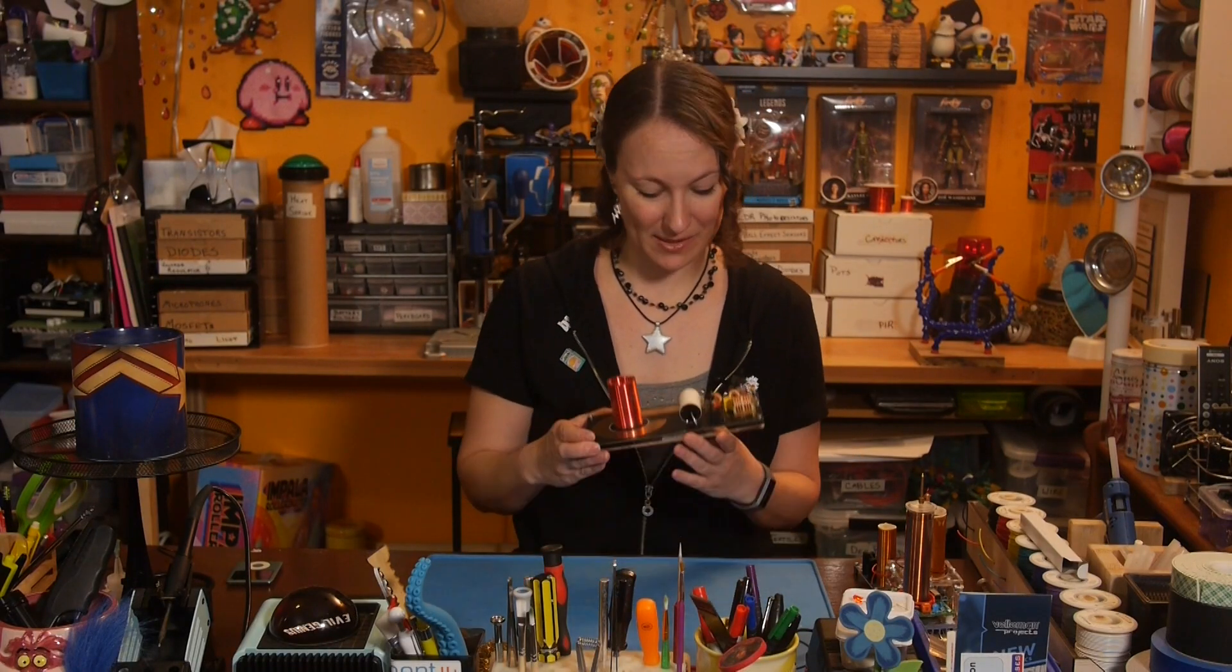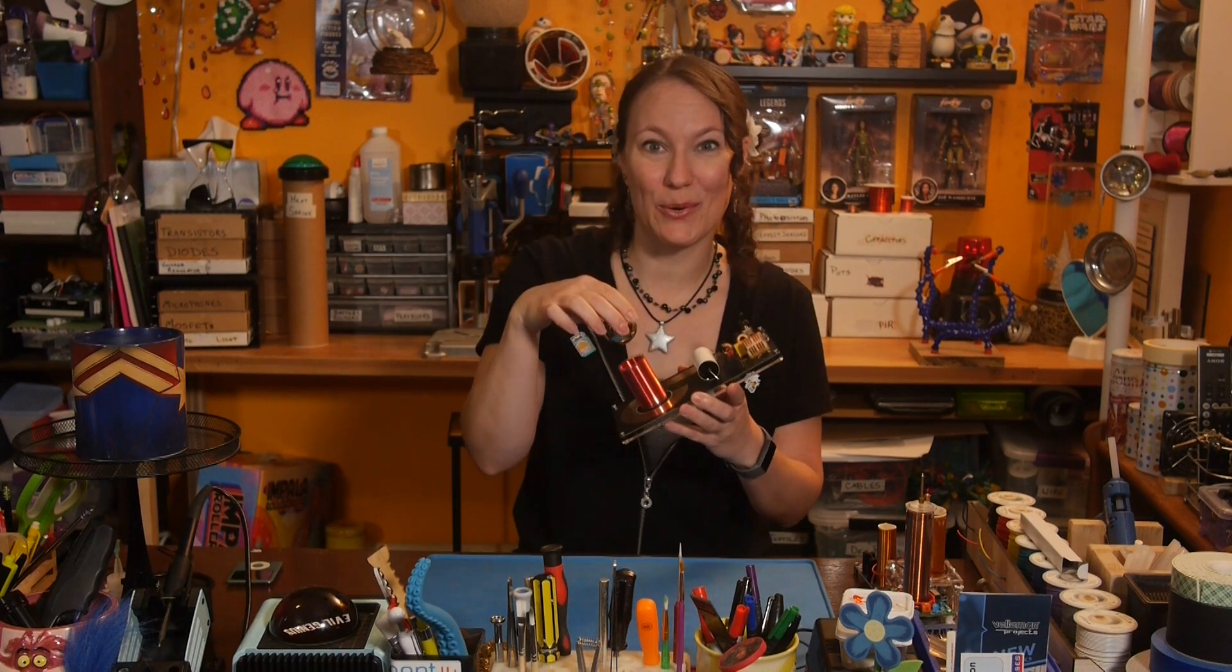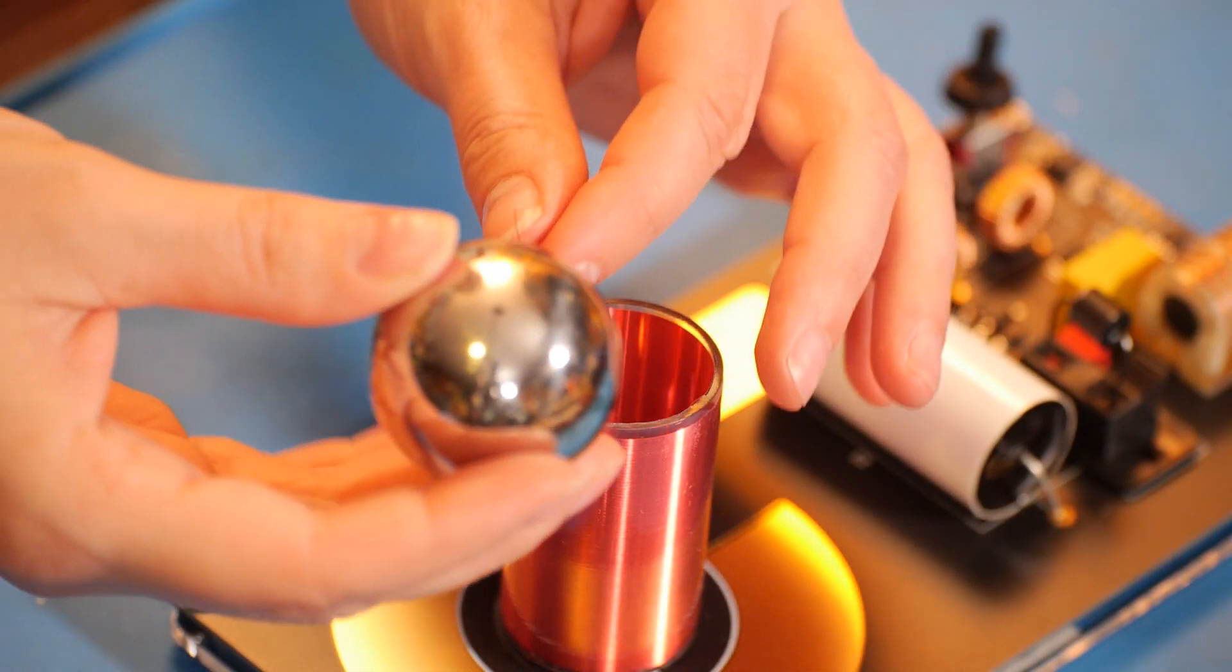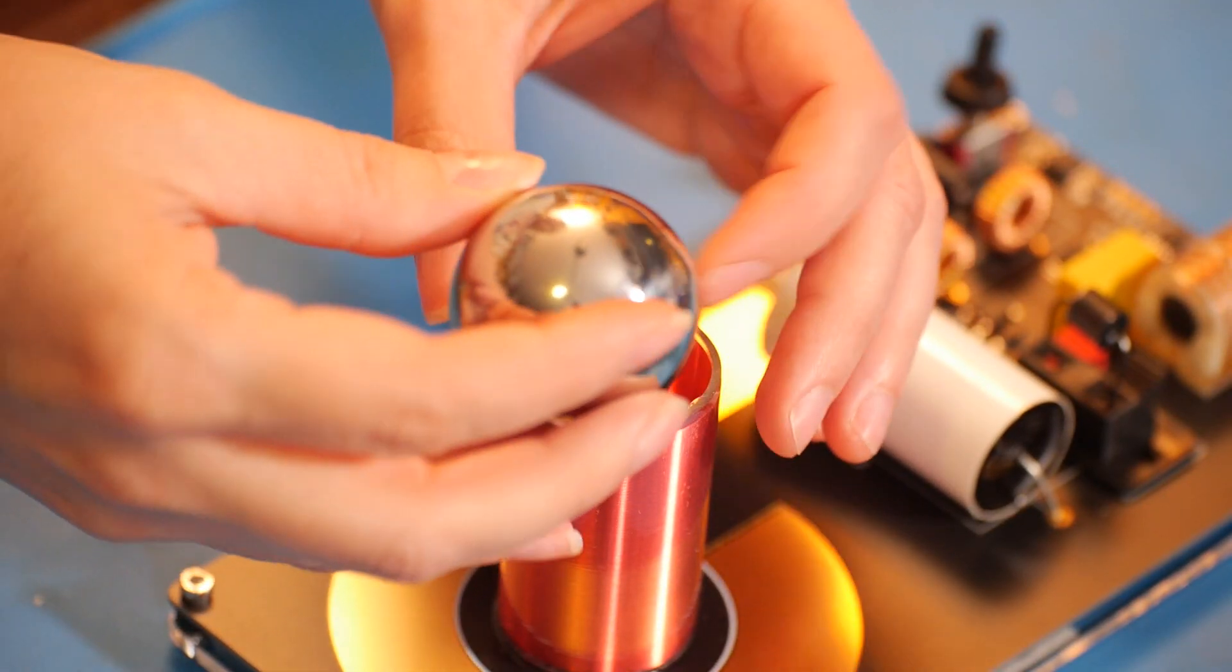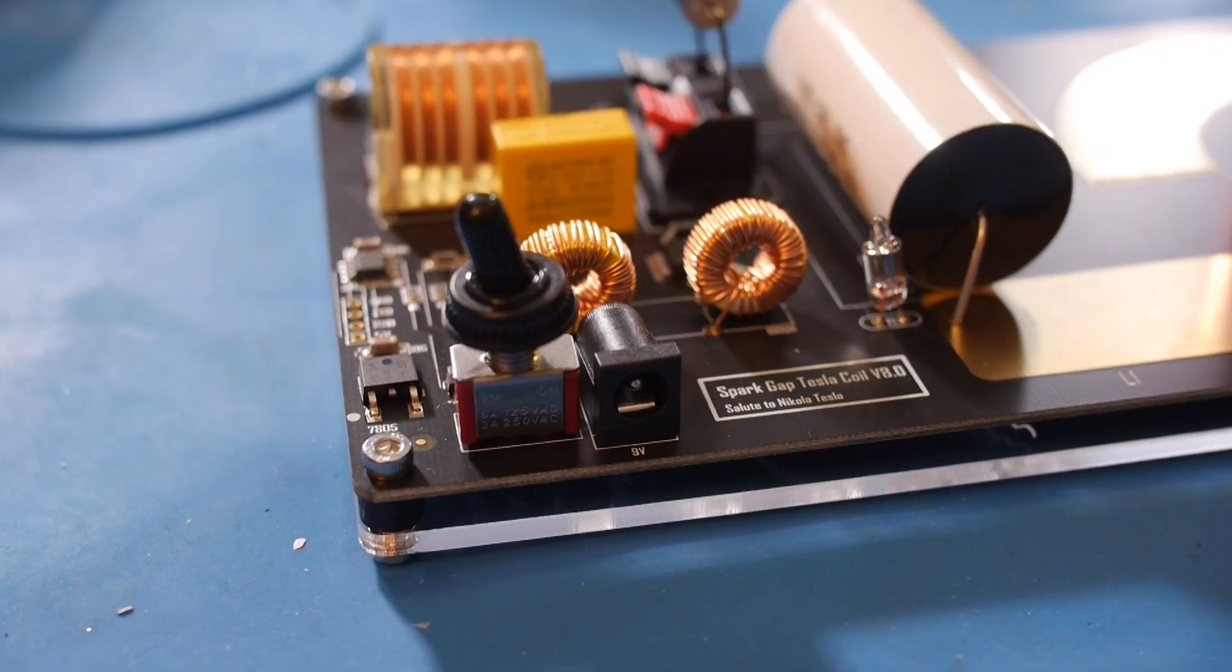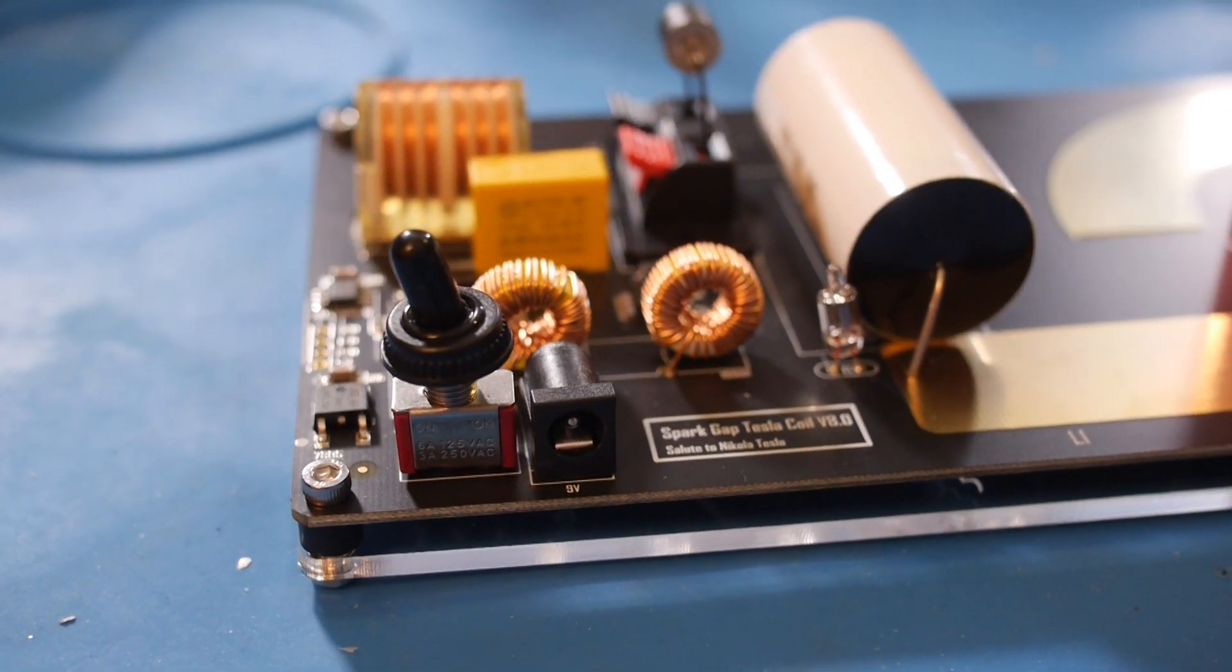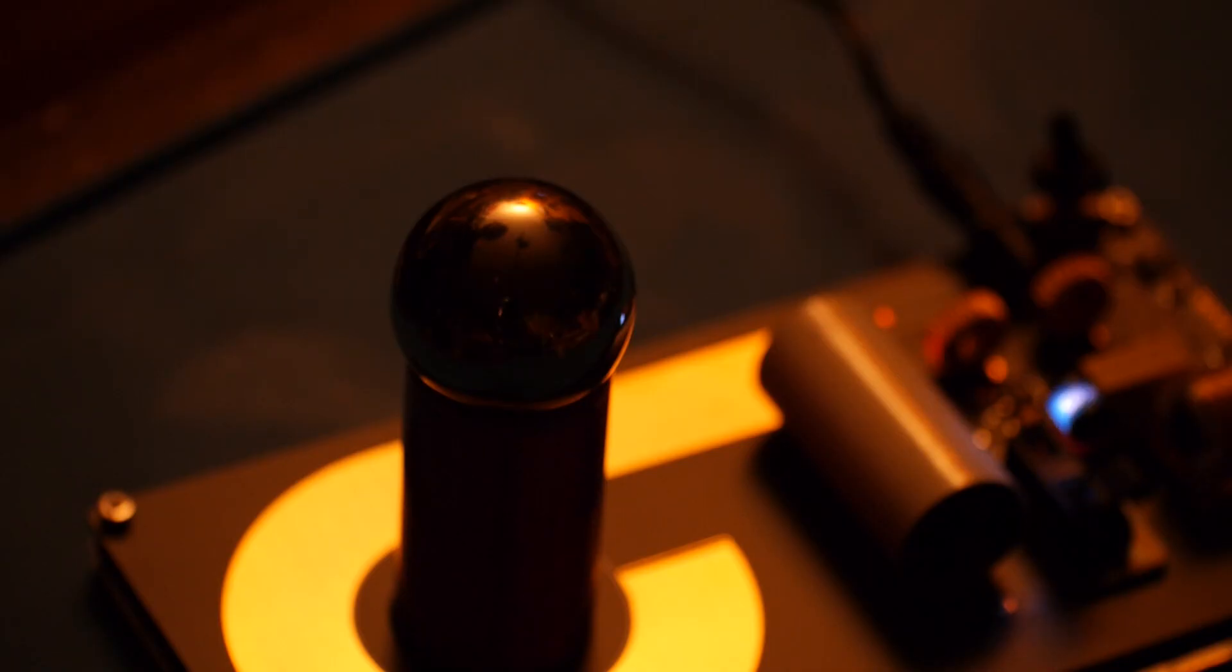The last Tesla coil operates off only 9 volts at 3 amps, but look how snazzy it is. And it came with this fancy conductor ball you can place on top of the coil. Just need to feed the wire into the little hole and place the ball on top of the secondary coil. This one doesn't have an aux jack, so no music this time. Instead, this one has a built-in oscillator, so the sparks automatically turn on and off at a set interval.